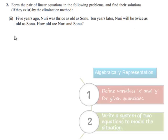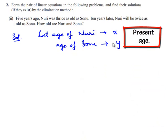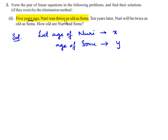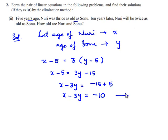Let us see the solution of this problem. Let the age of Nuri be x and the age of Sonu be y. According to the given problem, 5 years ago Nuri was thrice as old as Sonu, that is x minus 5 is equal to 3 times of y minus 5. This equation can be written as x minus 5 is equal to 3y minus 15, so x minus 3y is equal to minus 10. Name this as equation number 1.